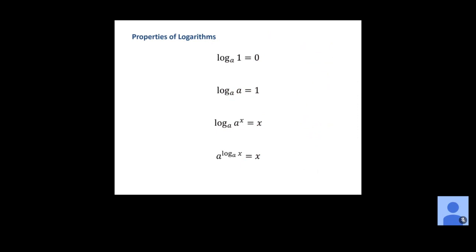Now some properties of logarithms. The base a log of 1 is always equal to 0, no matter what the base is. The reason: rewritten in exponential form, a to the 0 equals 1, and any value to the 0 power gives us 1. The next property says the base a log of a equals 1, because a to the first power is always equal to a. If the base and the number inside match up, that's always going to be equal to 1.